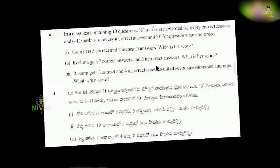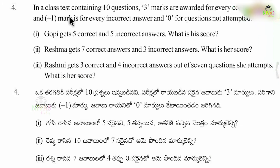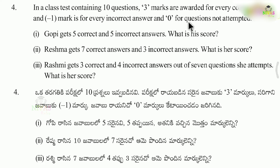Next question. In a class test containing 10 questions, 3 marks are awarded for every correct answer, and minus 1 mark for every incorrect answer, and 0 for questions not attempted.